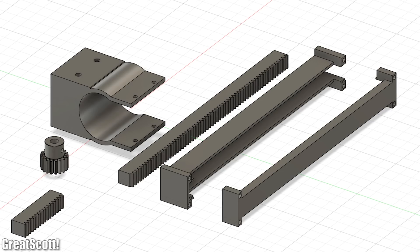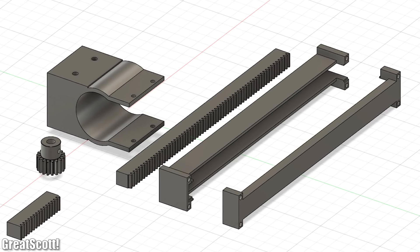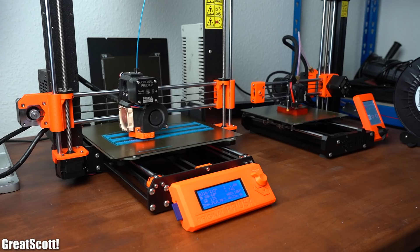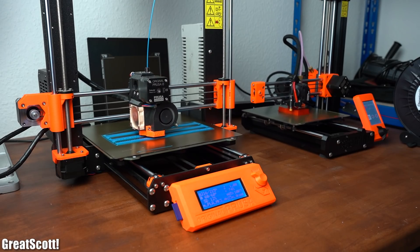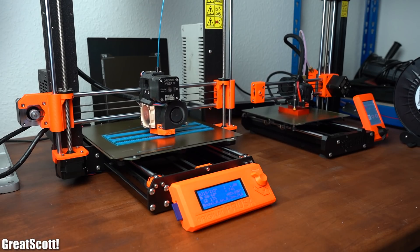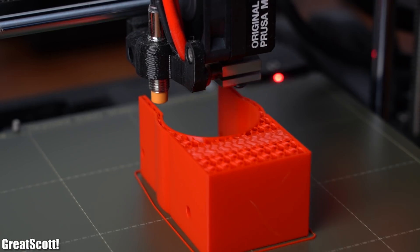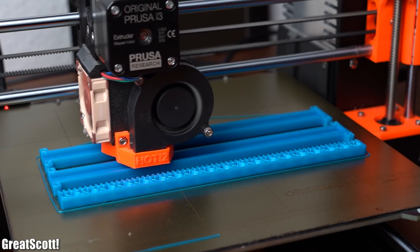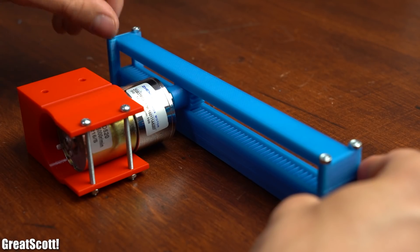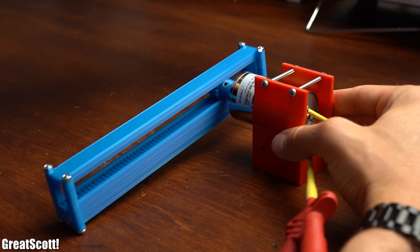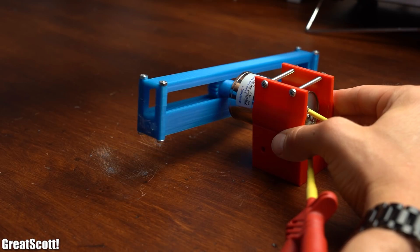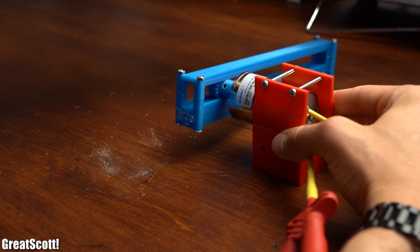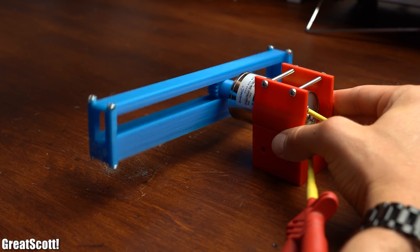And with that being completed all the mechanical components were pretty much done and thus I 3D printed all of them with my Prusa 3D printers which took around 4 hours in total. As soon as that was done I assembled the gear system for testing purposes and as you can see by alternatingly powering the motor the rack slides forwards and backwards without a problem.